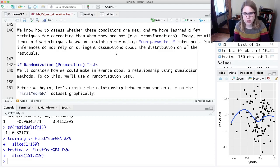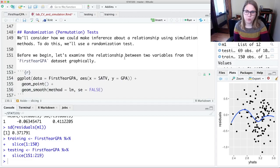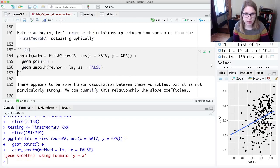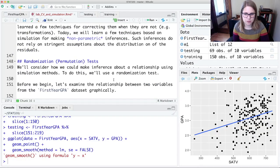So randomization is the one that is good for hypothesis testing. And we're going to look at the relationship between two variables from that first-year GPA data set. My Y is going to be the GPA, and my X is going to be SATV. I think we decided that was the single best predictor for GPA. So I could look at the plot of the data.